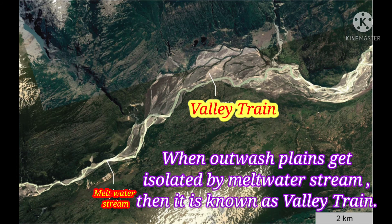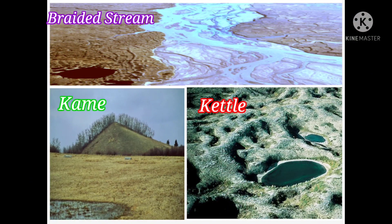In mountainous regions, the outwash streams are confined by valley sides and deposit thick layers of sediment in linear outwash planes called valley terrain. There may be other landforms developed in the outwash plane such as braided streams, kettles, and kames.